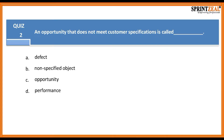Question two: An opportunity that does not meet a customer specification is called what? A defect, a non-specified object, an opportunity, or performance?